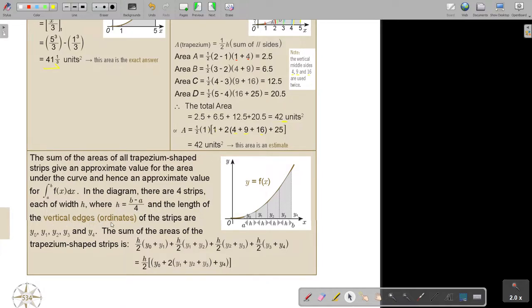The length of the vertical edges, the coordinates of the stripes, are y0, y1, y2, y3, y4. The sum of the areas: I start by saying y0 plus y1, y1 plus y2, y2 plus y3, y3 plus y4. Take note that every time I'm repeating the middle values. The first and last are not repeated. This is how I derive the trapezium rule.